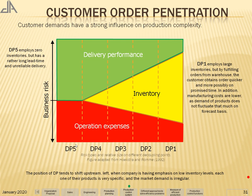We have cases like DP5, DP4, DP3, DP2, and DP1. DP5 employs zero inventories but has a rather long lead time and unreliable delivery. With no inventory, operating expenses are high and delivery performance — in terms of lead time — is also high.